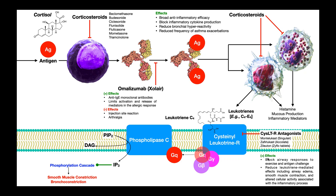These drugs block airway responses to exercise and antigen challenge, making them particularly good for exercise-induced asthma. They reduce the leukotriene-mediated effects, including airway edema, smooth muscle contraction, and altered cellular activity associated with inflammation. They're blocking the cysteinyl leukotriene receptor and therefore reducing bronchoconstriction. Compared to the other drugs discussed, if exercise triggers mucus production and bronchoconstriction, these drugs are the most indicated. They are not used in the treatment of COPD.